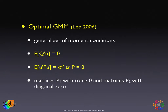Somewhat running ahead of our treatment of generalized methods of moments, in a paper by Lee there is a general set of moment conditions laid out. The first is simply the uncorrelatedness of the instruments with the error term: the expected value of Q prime u equals zero. The second set is new: a quadratic form in the error terms with a particular matrix P, where P must have either its trace equal to zero or all diagonal elements equal to zero. An obvious choice for P would be the matrix W, because it has all diagonal elements equal to zero.